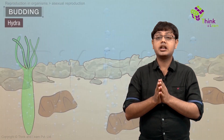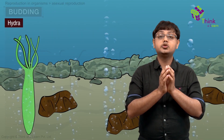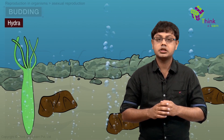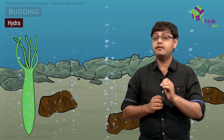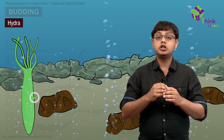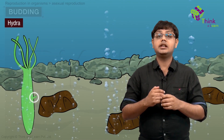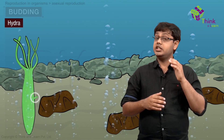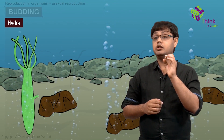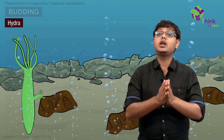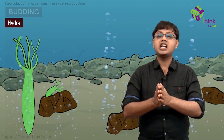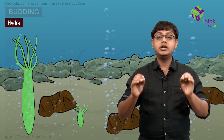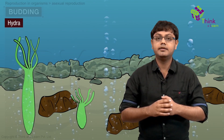Organisms such as hydra reproduce through budding using regenerative cells. In hydra, a bud develops as an outgrowth due to repeated cell division at one specific site. These buds develop into tiny individuals and when fully mature, detach from the parent body and become new independent individuals.